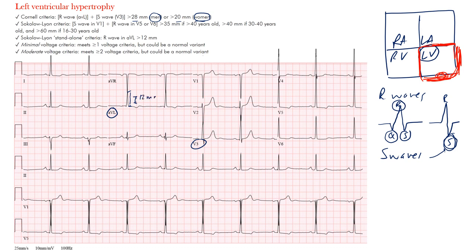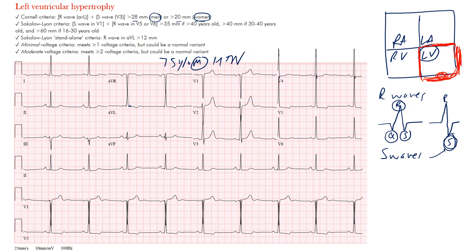The S wave in V3 doesn't show much — maybe five millimeters. So 12 plus 5 is 17 millimeters, which doesn't meet the criteria for either a man or a woman. This patient was a 75-year-old male with hypertension, so the Cornell criteria is not met based on this EKG.